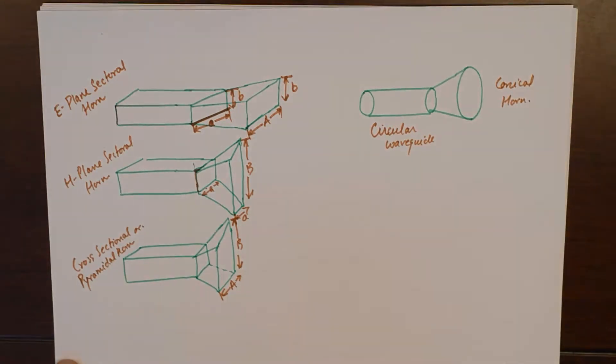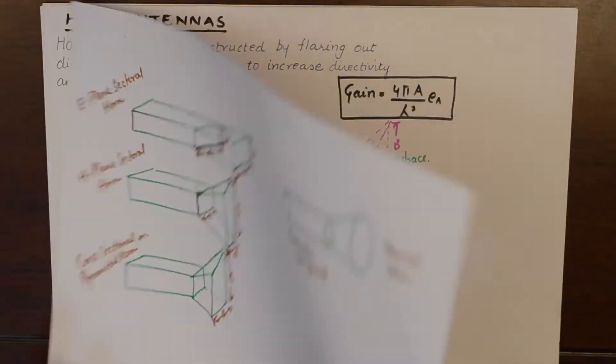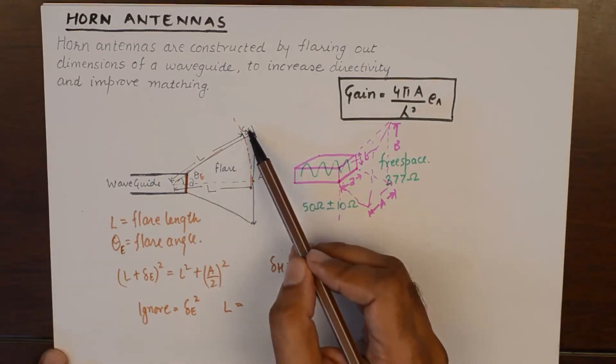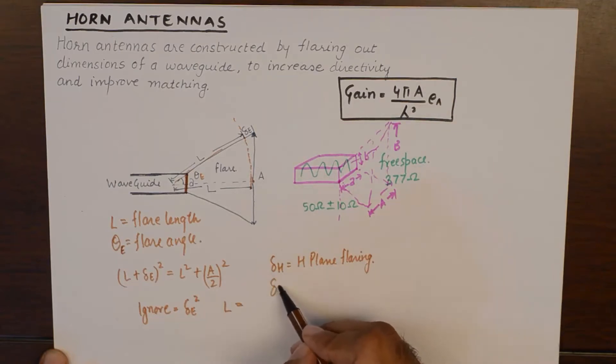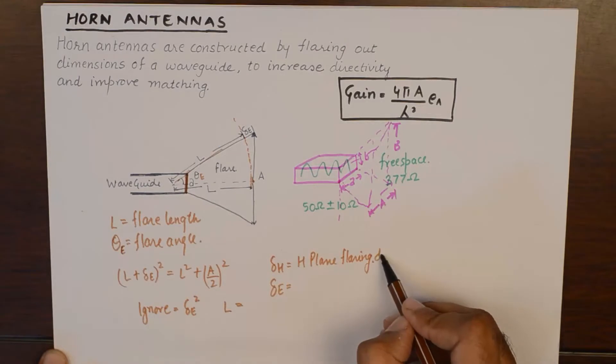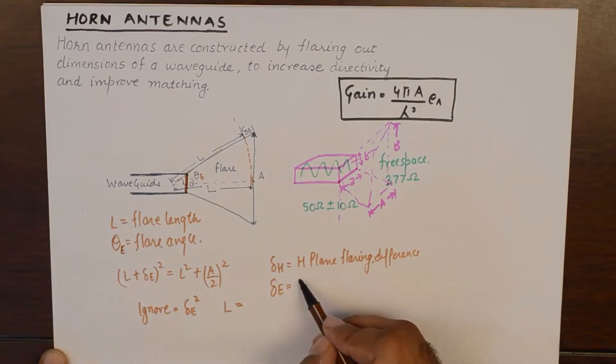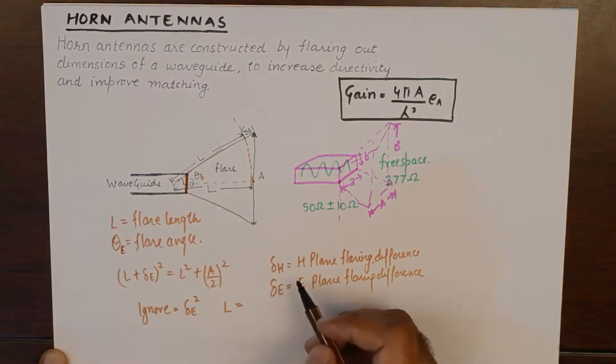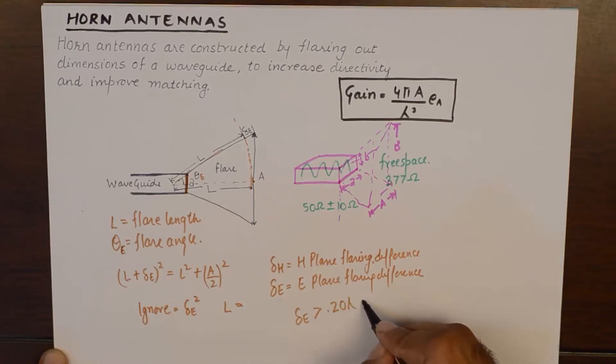The geometry of these horn antenna is pretty simple but an understanding of flaring length and delta E. Now, delta E and delta H they are in common language can be thought of as E plane flaring difference and H plane flaring difference. Now, they have a limitation like you cannot increase or you cannot keep delta E to be greater than 0.20 lambda where lambda is operational frequency.